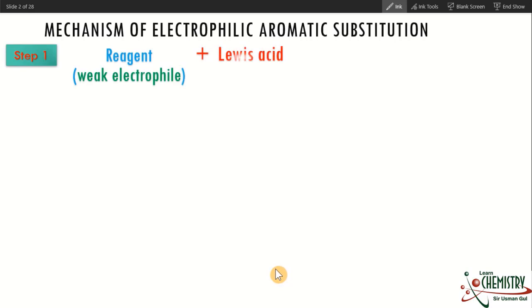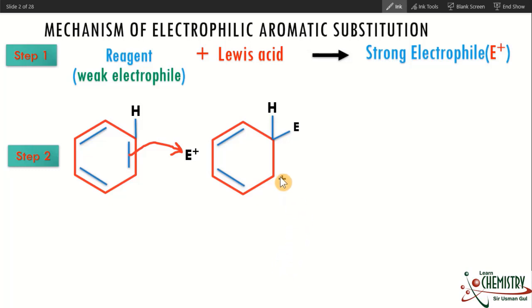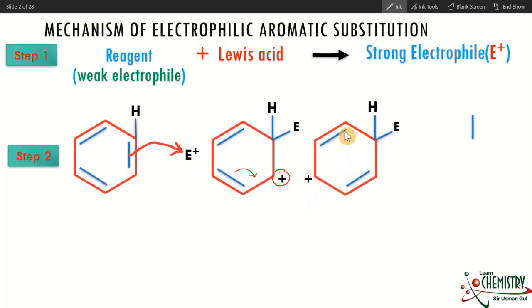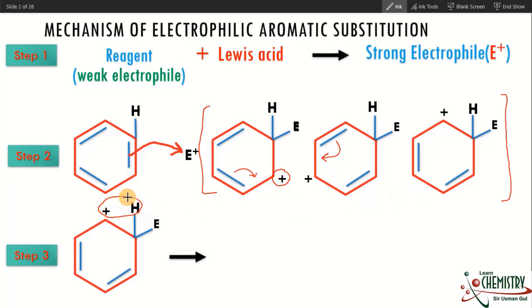I will now explain the general mechanism of electrophilic aromatic substitution of benzene. In the first step, our reagent, which is a weak electrophile, reacts with the Lewis acid catalyst to produce a strong electrophile. When the strong electrophile is generated, it reacts with benzene. One of the pi bonds of benzene attacks the electrophile, forming a carbocation. This positive charge gets delocalized across the benzene ring, forming a very stable delocalized cation. In step three, benzene loses its H+ ion to give the final substituted product.